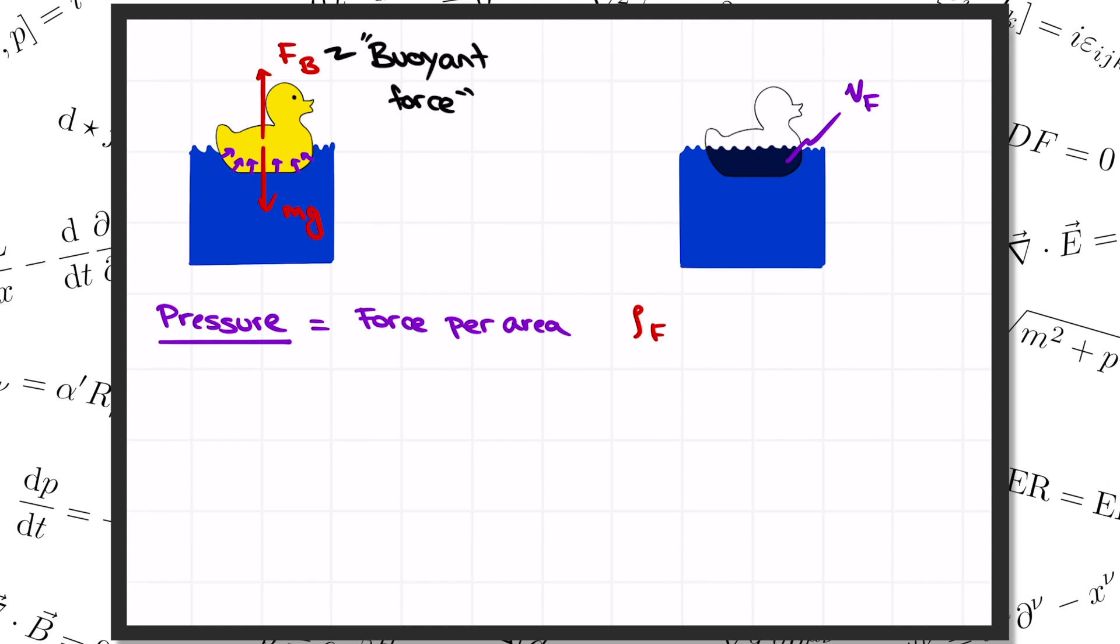Let's write rho sub F for the density of the fluid. In other words, the mass per unit volume. If that's a constant, then the mass of this highlighted bit of fluid in dark blue is rho, the density, times V, the volume. And so the weight is rho times V times g.